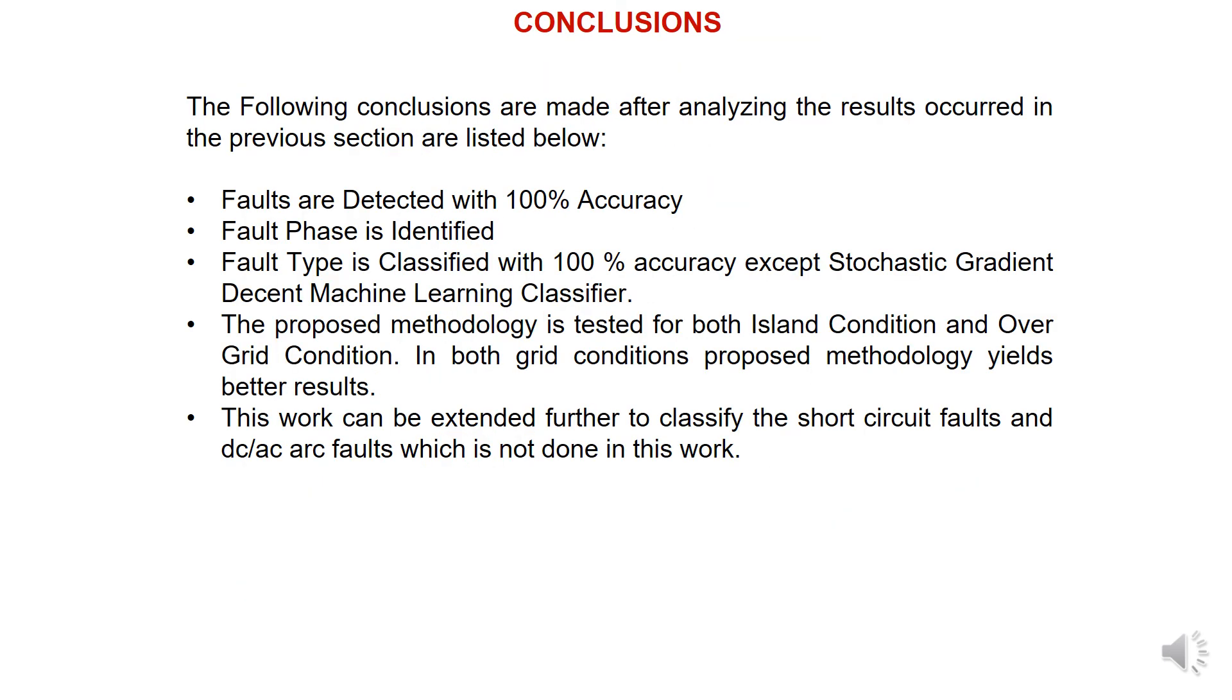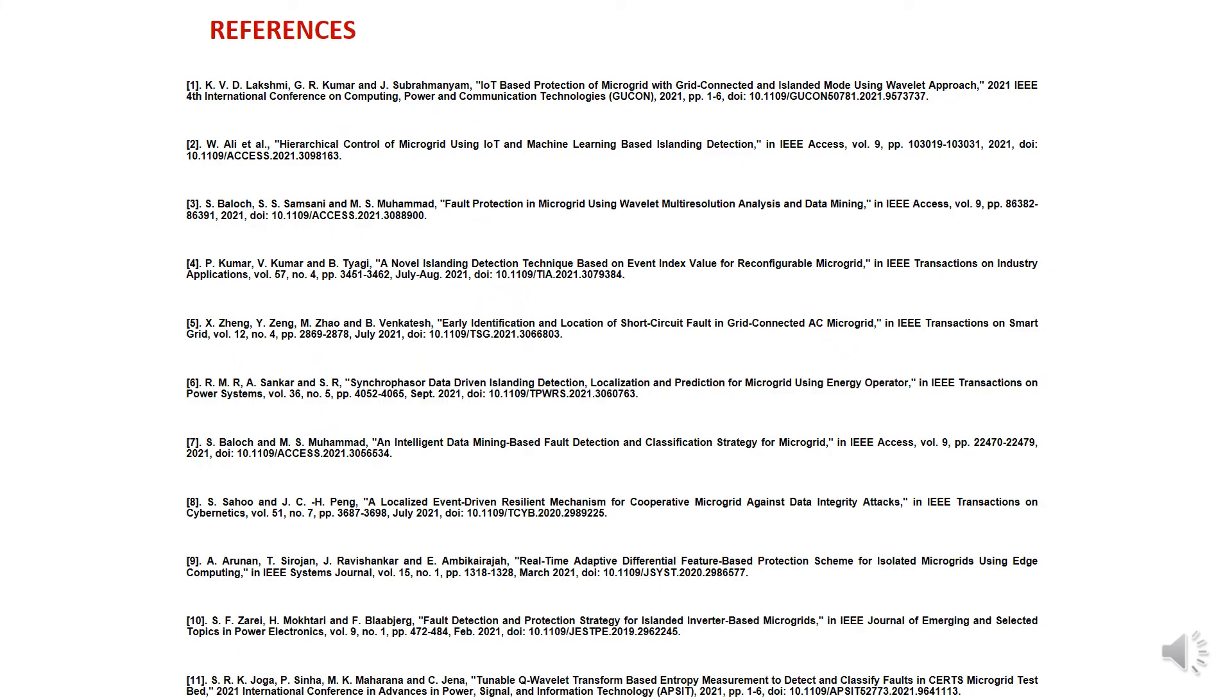We are drawing some conclusions. The following conclusions are made after analyzing the results: Faults are detected with 100% accuracy, fault phase is identified, and fault type is classified with 100% accuracy except Stochastic Gradient Descent. The proposed methodology was tested for both islanded and grid-connected conditions. This work can be extended further to classify short-circuit faults and DC-AC-arc faults, which is not done in this work.